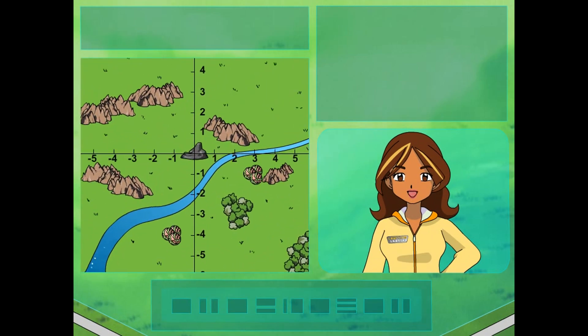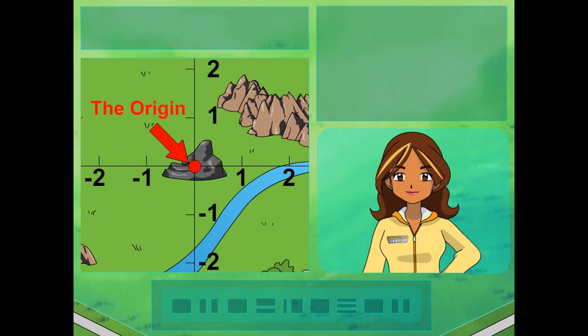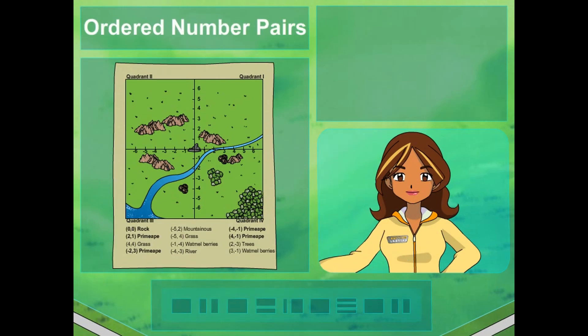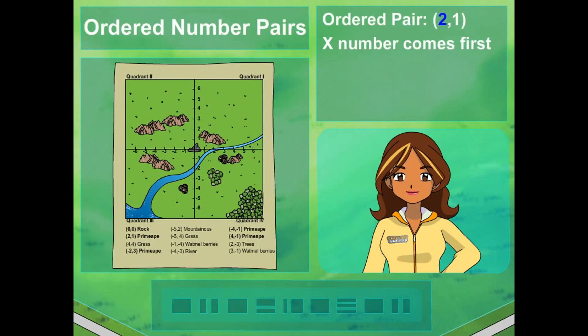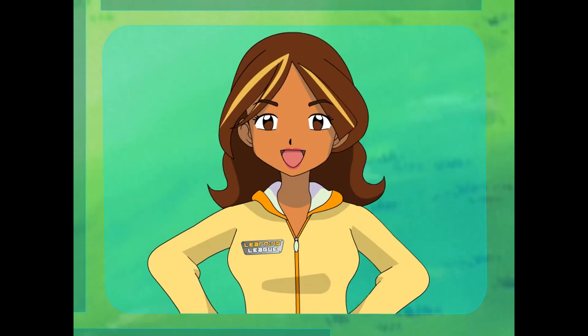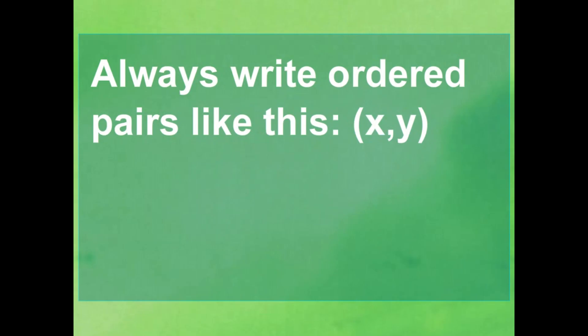Now, why do you think the point in the middle where the axes cross is called the origin? The origin? It's like the word originates, so it must be where you start. Exactly. So how do these pairs of numbers work? They're called ordered number pairs. The X number always comes first — it's called the X coordinate. The Y coordinate is always second. So the X number is a point along the X axis. I get it, and the Y number is a point along the Y axis. Just remember, ordered pairs are always written the same way: in parentheses, with the X coordinate number first, a comma, followed by the Y coordinate.